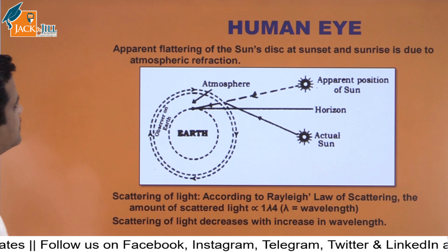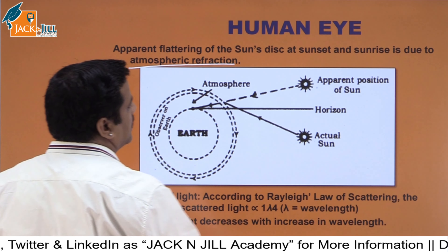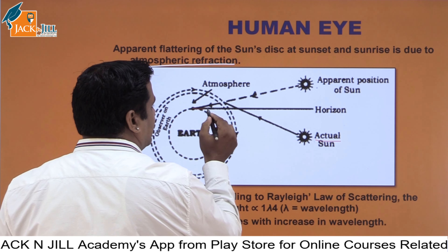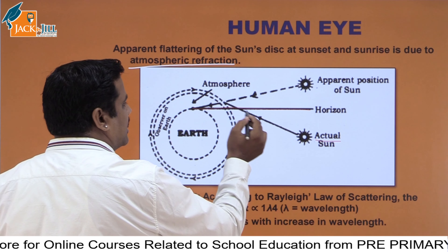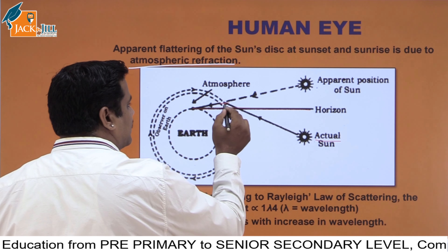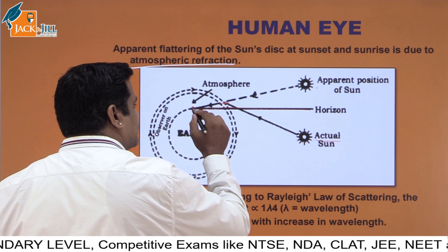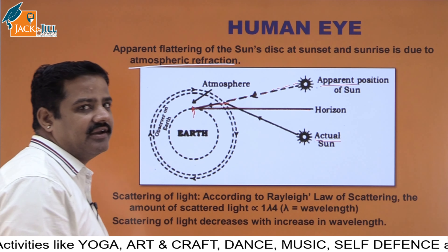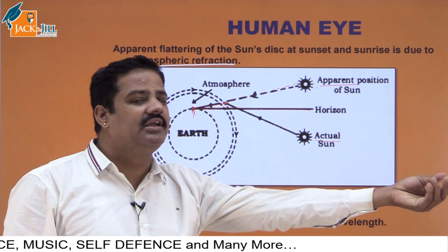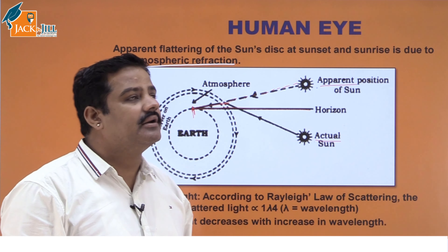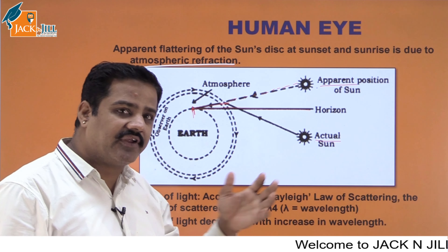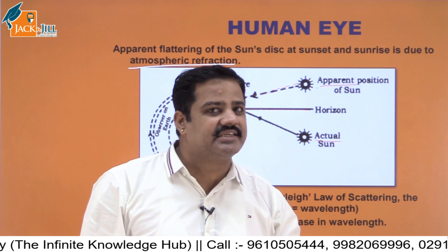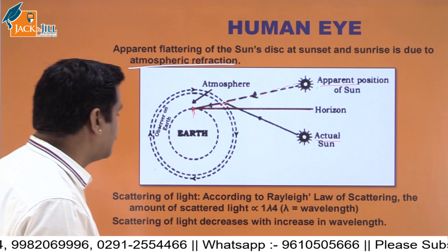The flattening of the sun's disc at sunset and sunrise is also due to atmospheric refraction. The actual sun is below the horizon, but refraction bends the light so that we see the apparent position above the horizon. The sun is not actually there — it is below the horizon — but it appears above due to the difference in densities of the atmospheric layers.